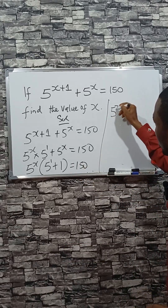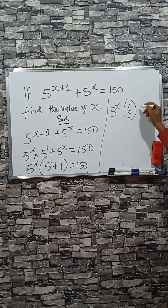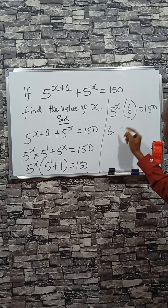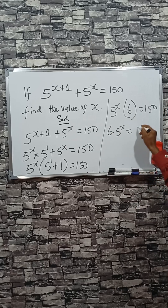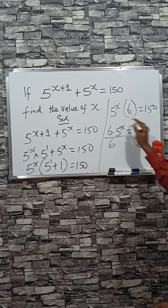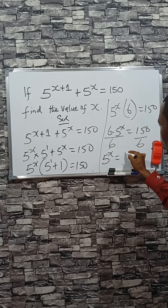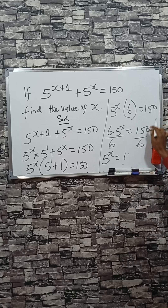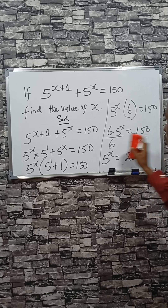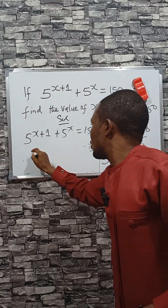So 5 raised to the power of x times (5 plus 1) is 6, equals 150. That means 6 times 5 raised to the power x equals 150. If you divide by 6, you have 5 raised to the power of x equals 150 divided by 6, which is 25.